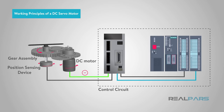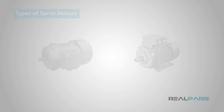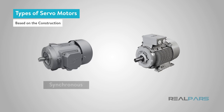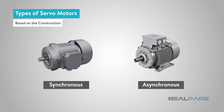If the error is negative, the armature voltage reverses and hence the armature rotates in the opposite direction. The working principles of an AC servo motor are based on the construction with two distinct types: synchronous and asynchronous, or induction.